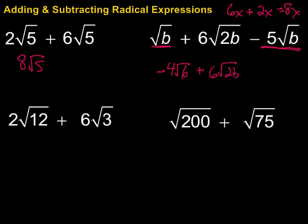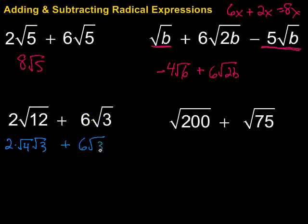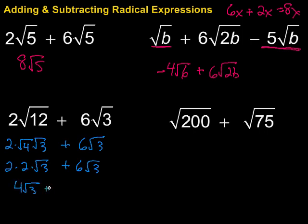They're not always going to be easy and ready for us to combine — sometimes we have to do a little work first. Take this example: 2 times the square root of 12 plus 6 times the square root of 3. You might think there's nothing to do because they don't have the same radicals, but can we get them to be the same? Well, 12 has a perfect square factor of 4, so we can write 2 times the square root of 4 times the square root of 3, plus 6 times the square root of 3. Cleaning that up: 2 times 2 is 4, giving us 4 square roots of 3 plus 6 square roots of 3.